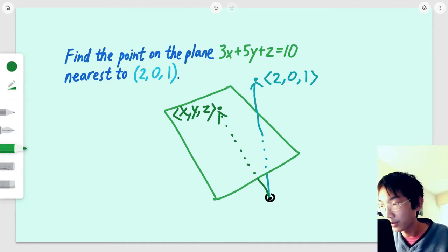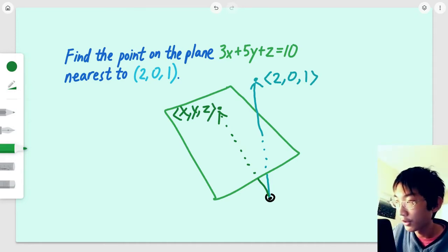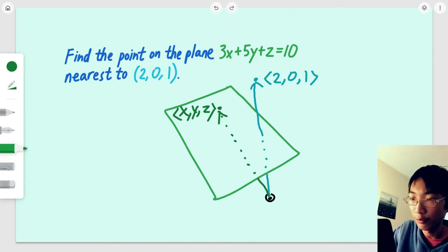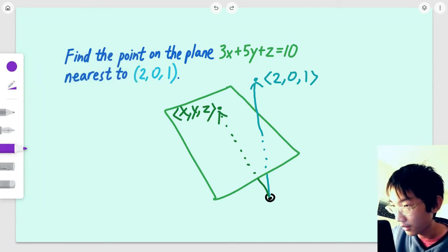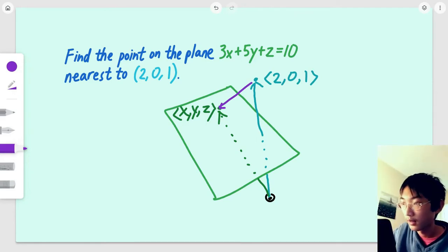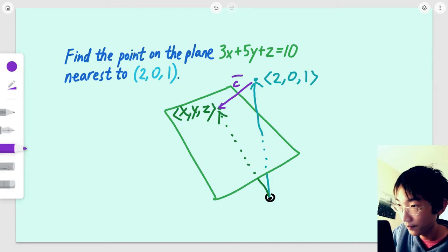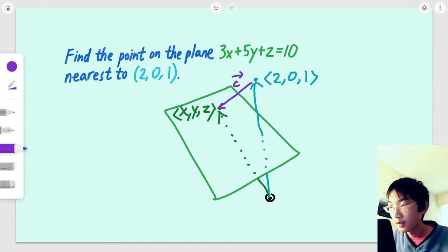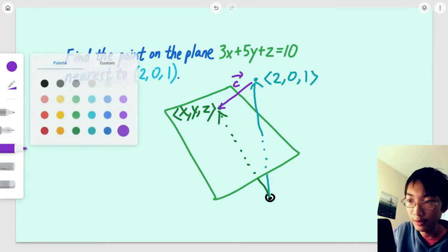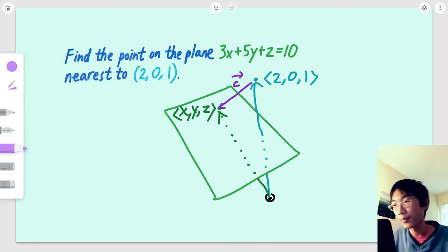Now let's approach this problem. We know that we have a point at (2, 0, 1), and we want to go from that point to the point on the plane. Let's connect them with this vector. Let's call it c for the connecting vector. Before we try to find out what c exactly is, we can start by trying to deduce its properties.